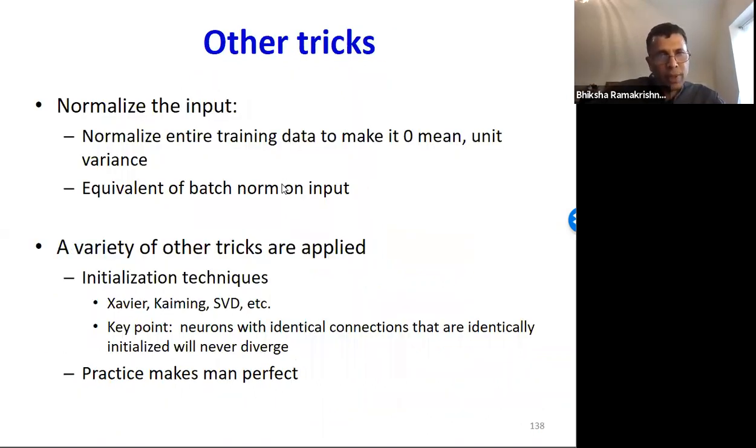And then there are other tricks, like normalizing the entire training data to be zero mean and unit variance, which is the equivalent of batch norm on the input. There are many techniques for how best to initialize the model. And initializing the model properly tends to be very key to actually learning good networks. So, there are methods like Xavier and He initialization, Kaiming's initialization, initialization using singular value decomposition, etc. And you're going to encounter some of these in your homework. That is a key point. If you have multiple neurons in a layer, which have been identically initialized, those two will remain identical through the training. So, this is something that must always be avoided.